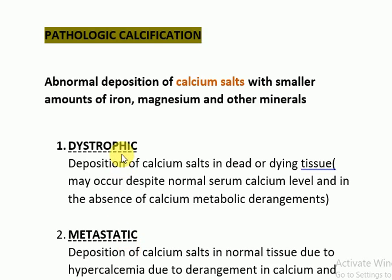Dystrophic pathologic calcification is the deposition of calcium salts in dead or dying tissues. It may occur despite normal serum calcium levels and in the absence of calcium metabolic derangements — meaning there is no hormonal calcium problem and the serum calcium level is within normal range on lab testing, yet there is deposition of calcium salts.